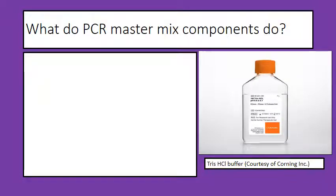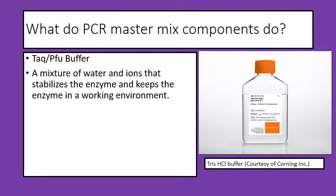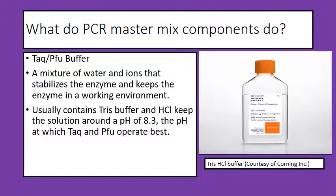The next component is the Taq or Pfu buffer — just a mixture of water and ions that stabilizes the enzyme and keeps it in a working environment. It's very important to keep enzymes happy otherwise they won't work. Usually this buffer contains Tris buffer titrated with HCl — hydrochloric acid — to make it slightly more acidic, with a target pH of around 8.3, which is the optimal pH for both Taq and Pfu polymerase.